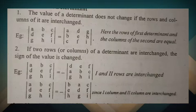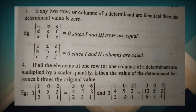First column has elements a, d, g; second column has elements b, e, h. This is the same figure with the sign changed. The value of the first determinant and the value of the second determinant differ by a minus sign. That is the next property.